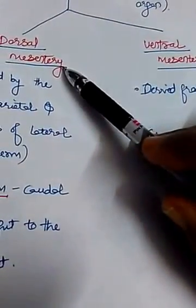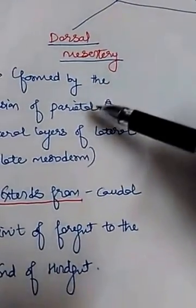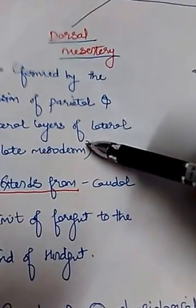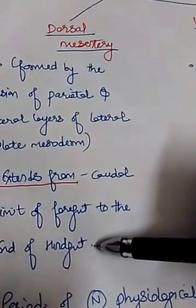So mesentery is of two types we know: dorsal and ventral mesentery. Dorsal mesentery, as I have told, is formed by fusion of both parietal and visceral layers of lateral plate mesoderm and it extends from the cordial limit of foregut to the end of hindgut.